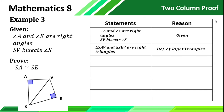Since SB bisects angle S, when we say bisect, it divides the angle into two congruent parts. Those two angles are angle ASB and angle ESB, and they are congruent because of the definition of angle bisector. The difference between angle bisector and line segment bisector: angle bisector divides the angle into two congruent parts, while line segment bisector divides the line segment into two congruent parts.